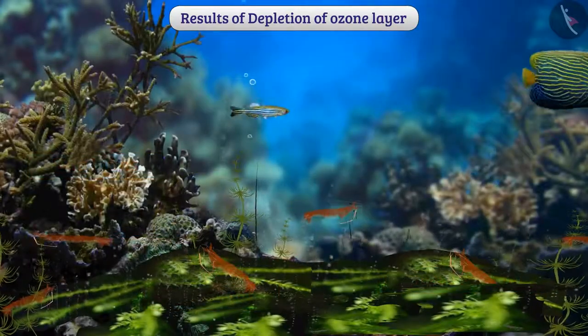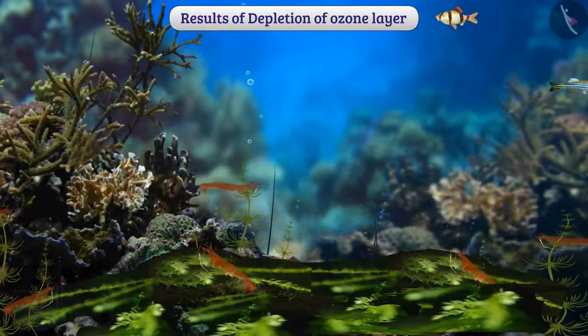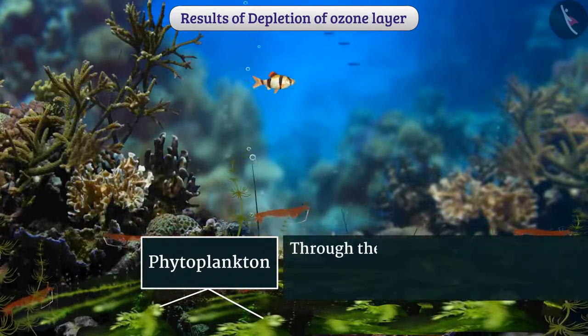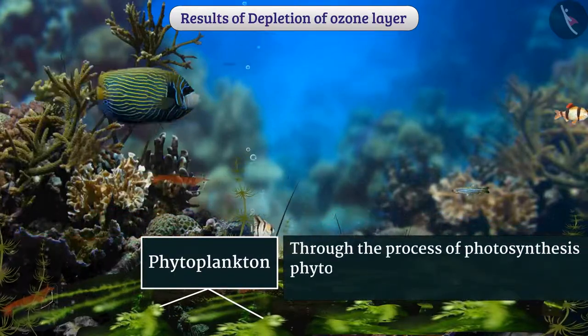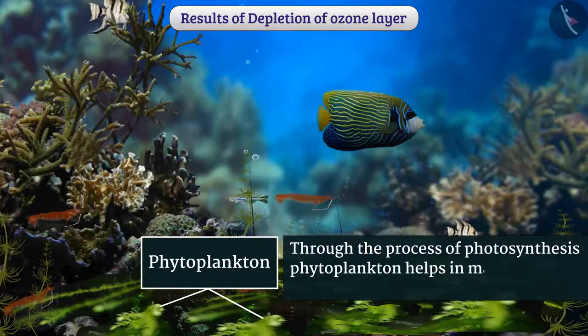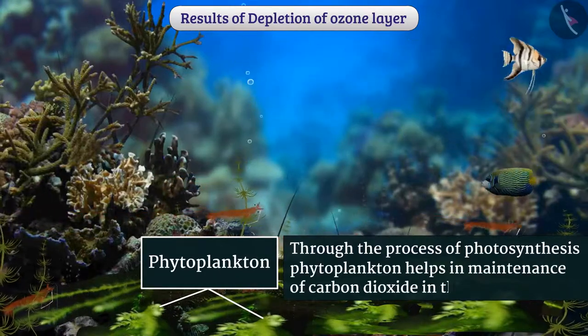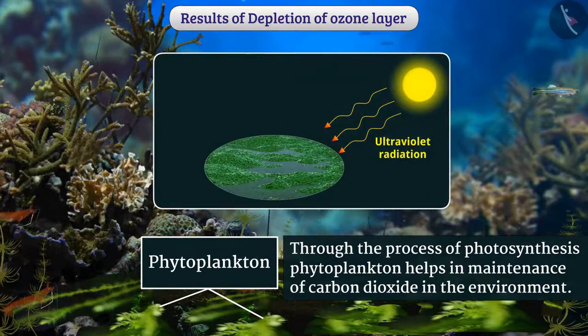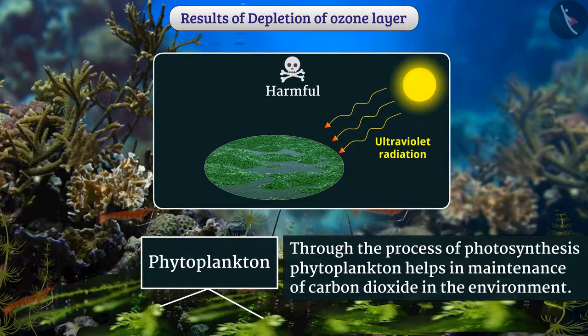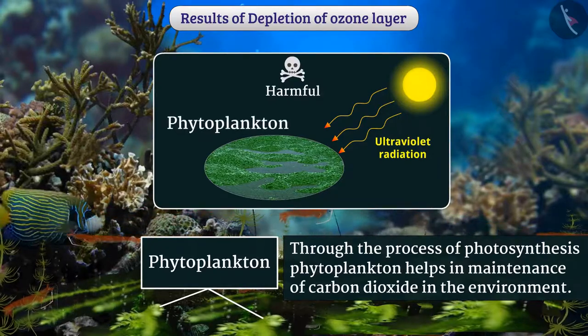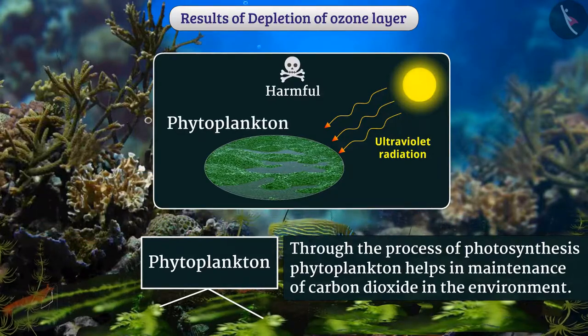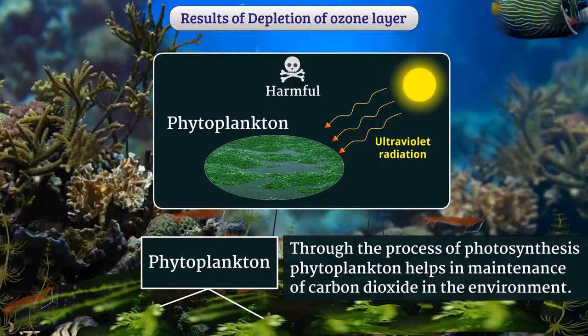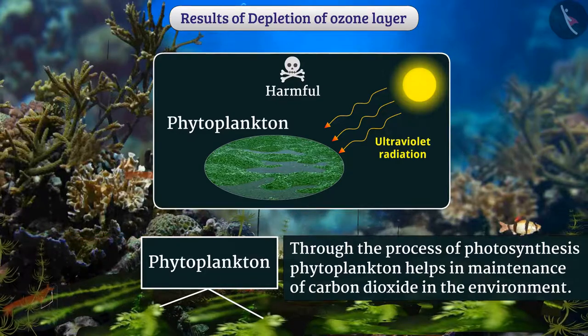For aquatic animals such as fish, the main source of food is phytoplankton. Through the process of photosynthesis, phytoplankton helps in the maintenance of carbon dioxide in the environment. Ultraviolet radiation is harmful to aquatic plants such as phytoplankton. If there are no phytoplankton, then there will be no fish and many animals will not get food including humans.